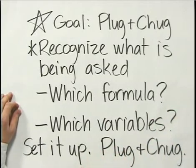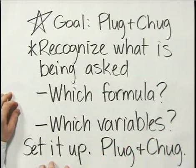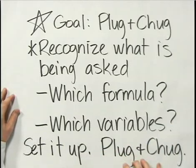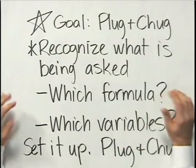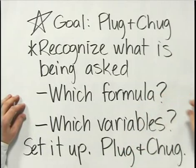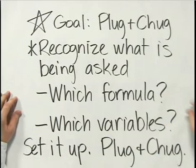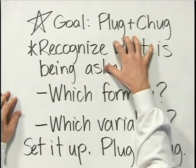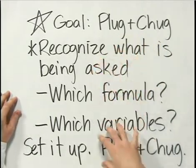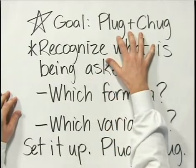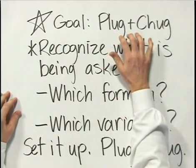Once you recognize what is being asked, then you can set it up — that's the second step. And then once you have it set up, it's just plug and chug: solving for the variable or variables that remain to be solved for. The goal is to take a complicated, confusing problem, break it down into several steps, turn it into plug and chug, which is always the easiest way to solve a problem. Those are the basic rules for problem solving that I want you to be aware of and keep in mind as you look at the problems I'm going to be going over.